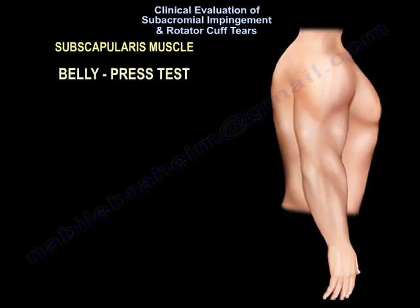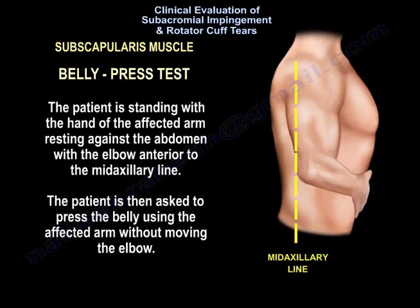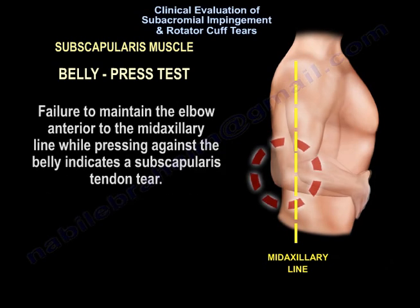The belly press test: The patient is standing with the hand of the affected arm rested against the abdomen, with the elbow anterior to the mid-axillary line. The patient is then asked to press the belly using the affected arm without moving the elbow. Failure to maintain the elbow anterior to the mid-axillary line while pressing against the belly indicates subscapularis tear.